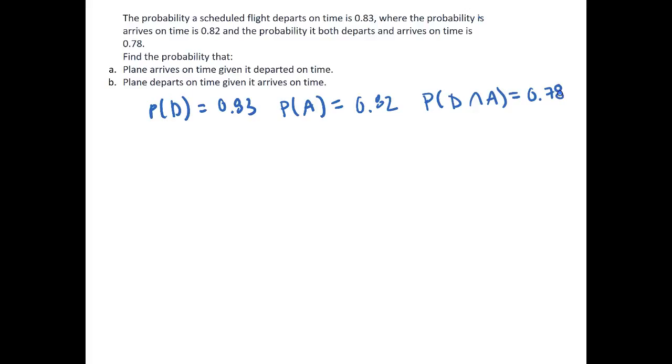By the rules of conditional probability, we know that the probability that a plane arrives on time given that it departed on time—remember the given is this line here, given it departed on time—is equal to the intersection of the two events, so probability of A and D, all over the given, so the probability of D.